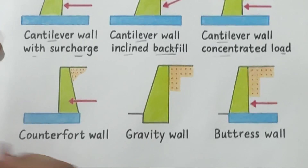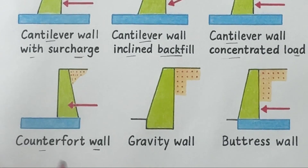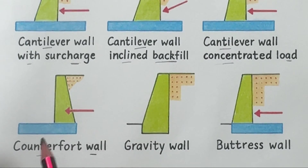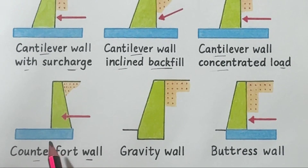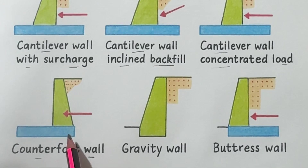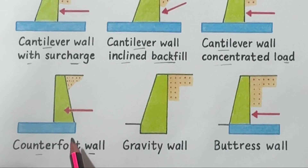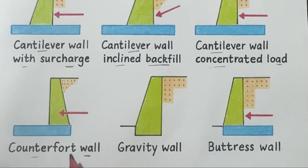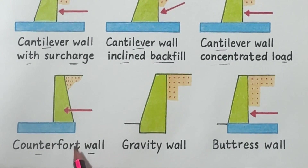Number seven: counterfort wall. When the retaining wall is very tall, a simple cantilever design isn't enough. So vertical concrete webs called counterforts are added at the back of the wall. These act like hidden braces connecting the stem to the base slab, reducing bending stress and making the structure more economical for large heights.